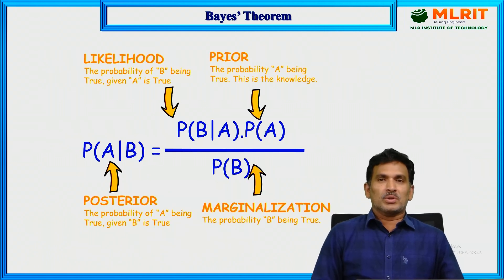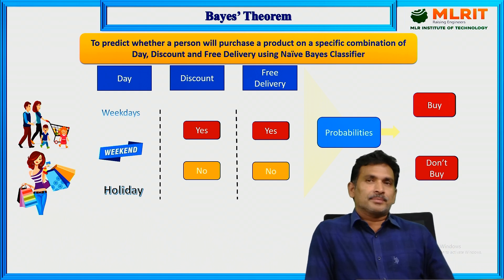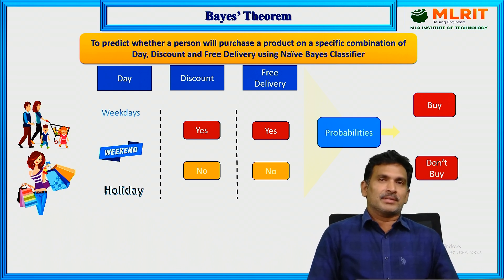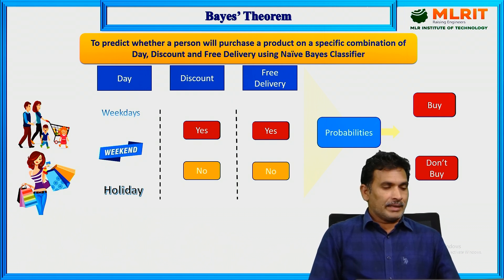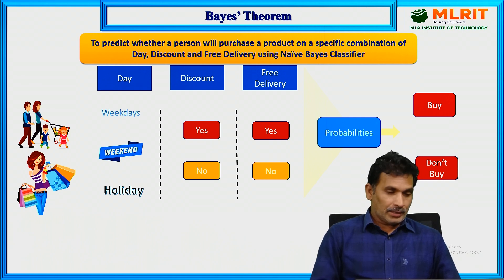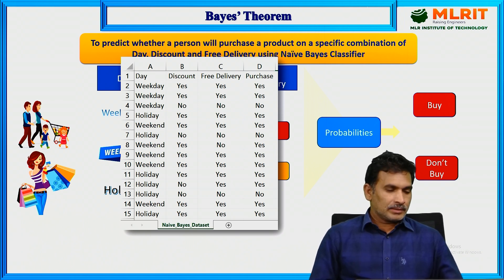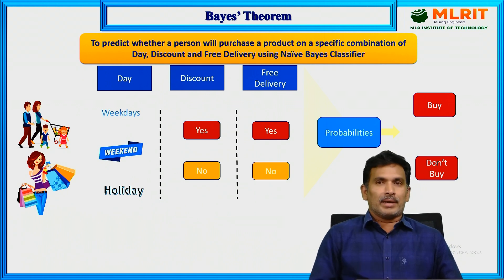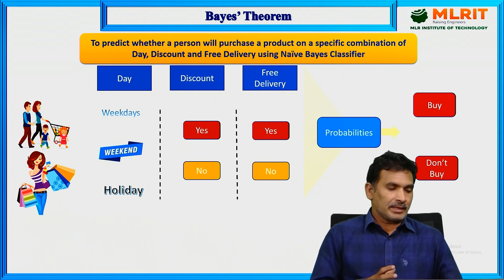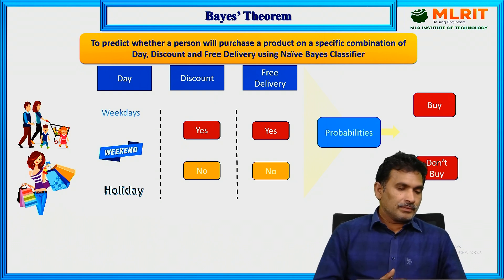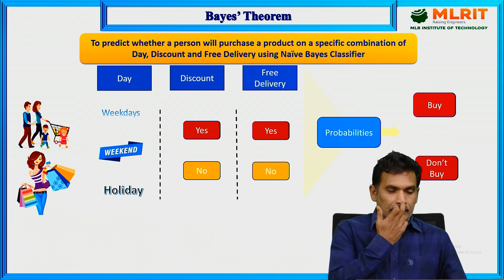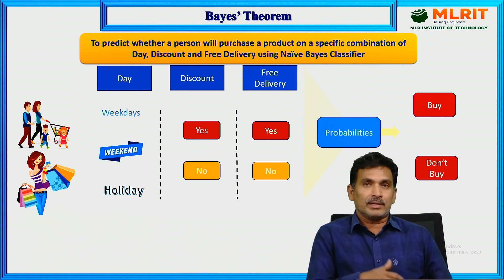Let us take one simple real-life example to understand where we could apply Bayes' theorem. The problem statement is: we have to predict whether a person will purchase a product on a specific combination of day, discount, and free delivery, using a Naive Bayes classifier. The input data has attributes — day, discount, and free delivery — where day includes weekend, weekday, and holiday, discount is yes or no, and free delivery is yes or no.